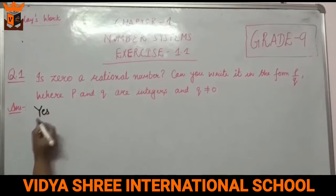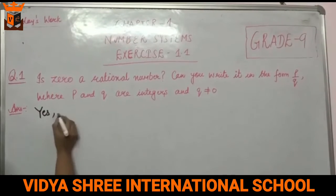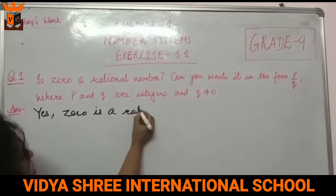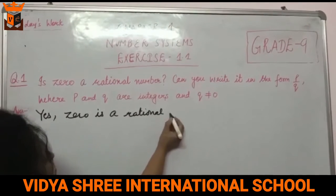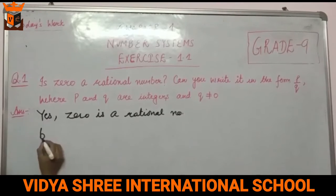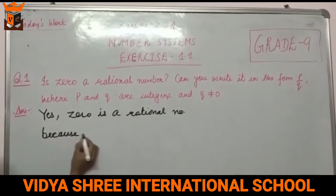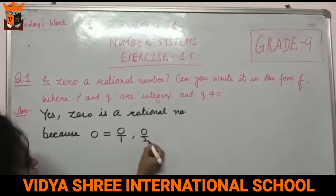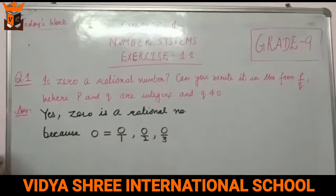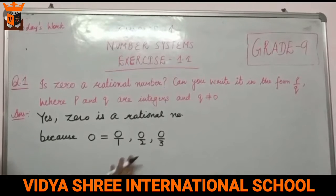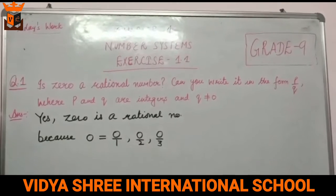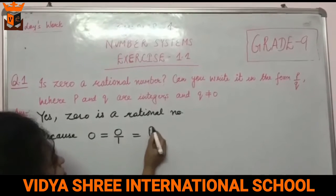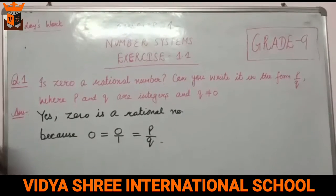Yes, zero is a rational number. Because hum zero ko likh sakti hai — zero by one, zero by two, zero by three. Hum zero ko aise likh sakti hai; denominator hum uska kuch bhi rakh sakti hai. Toh agar hum isko aise likh sakti hai, toh ye kaisi form hai? P by q form hai. Aur q ki value non-zero hai, isliye yes, zero is a rational number.